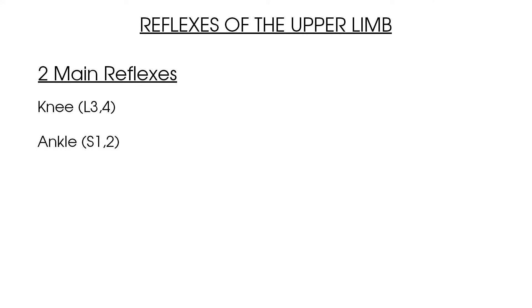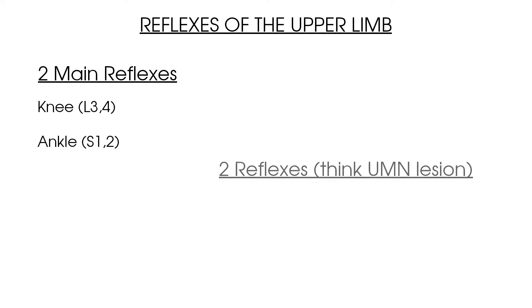To summarise: there are two main reflexes to test — the knee reflex at spinal level L3-L4 and the ankle reflex at S1-S2. Test these on both sides and categorise them as hyperreflexive, hyporeflexive, normal, or absent. There are two additional reflexes — the Babinski and Clonus — which should be completed as part of any lumbar spine neurological assessment or if you suspect signs of an upper motor neuron disorder.